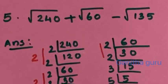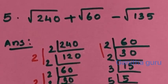Next question: square root of 240 plus square root of 60 minus square root of 135. Let's do this one.